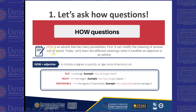The word 'how' is an adverb that has many possibilities. First, it can modify some words. We are learning today the different meanings when it modifies an adjective or an adverb. So, 'how' plus an adjective indicates a degree, a quantity, or some dimensions.